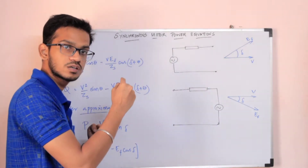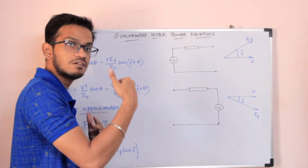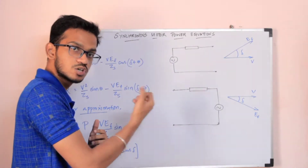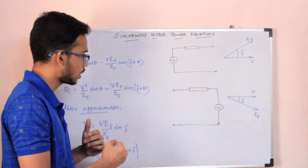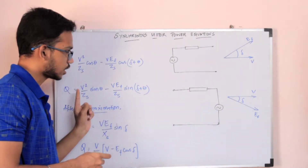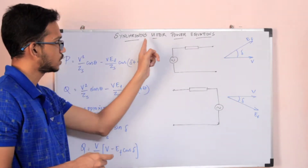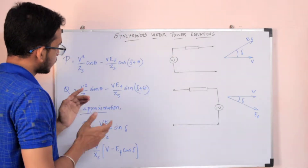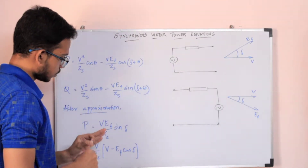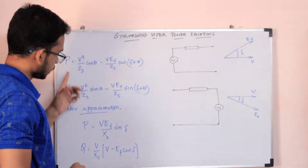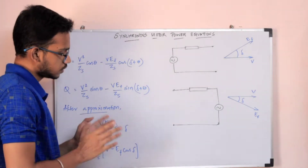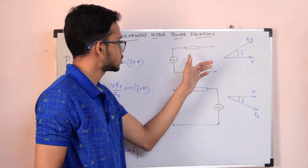In the generator, P and Q represent the output power. That's why we talk about absorbed real power and absorbed reactive power in the case of the motor. The previous approach is to take an approximation when turning the equations into this form.